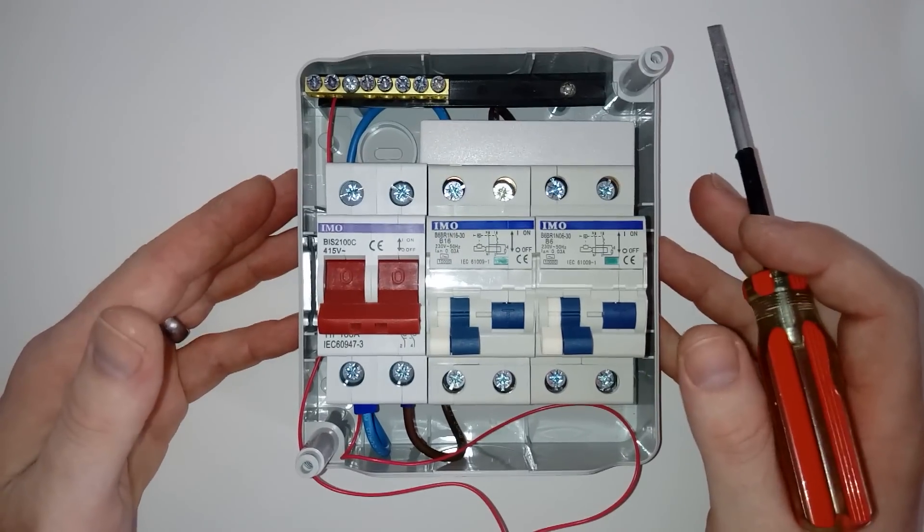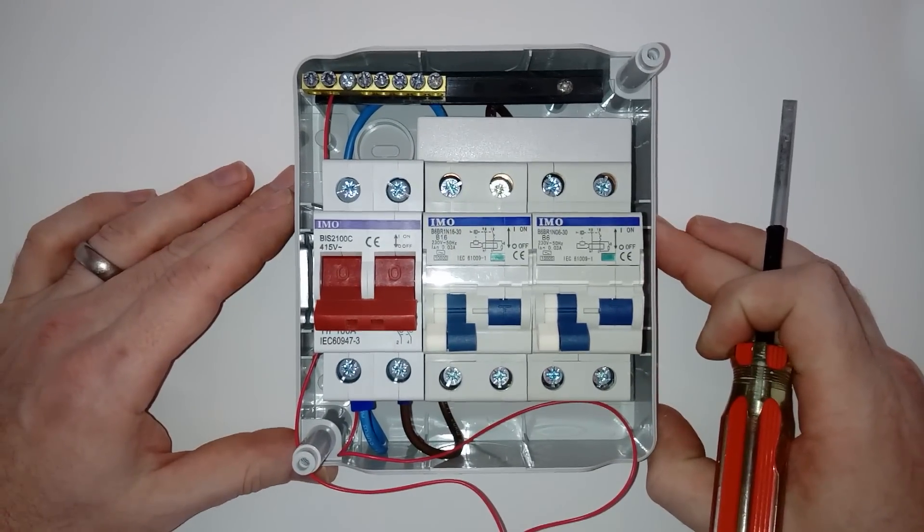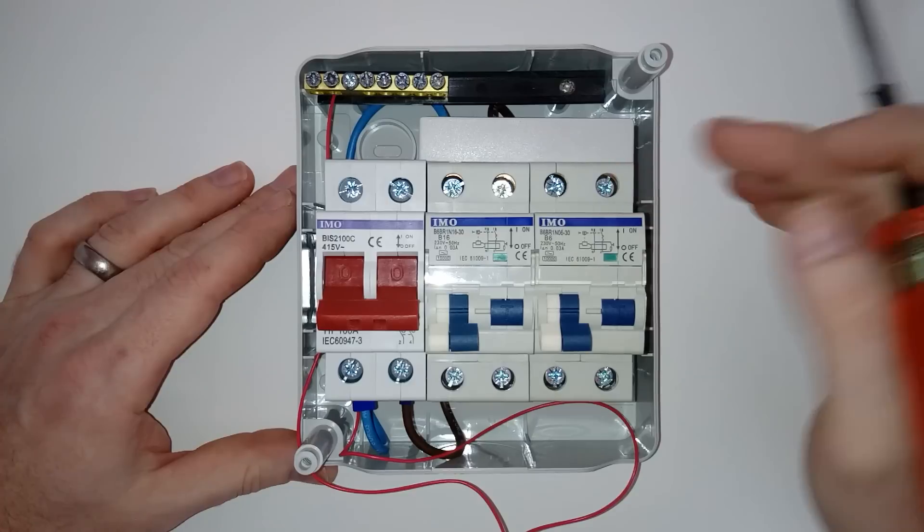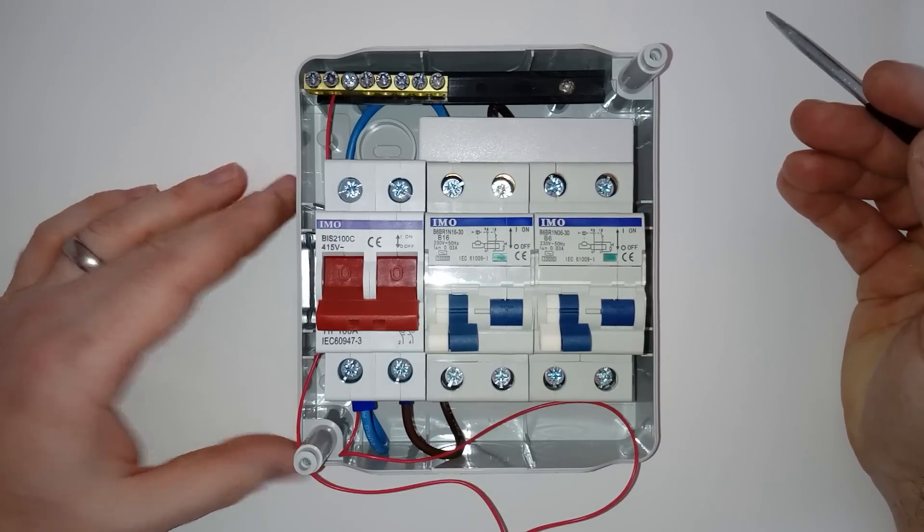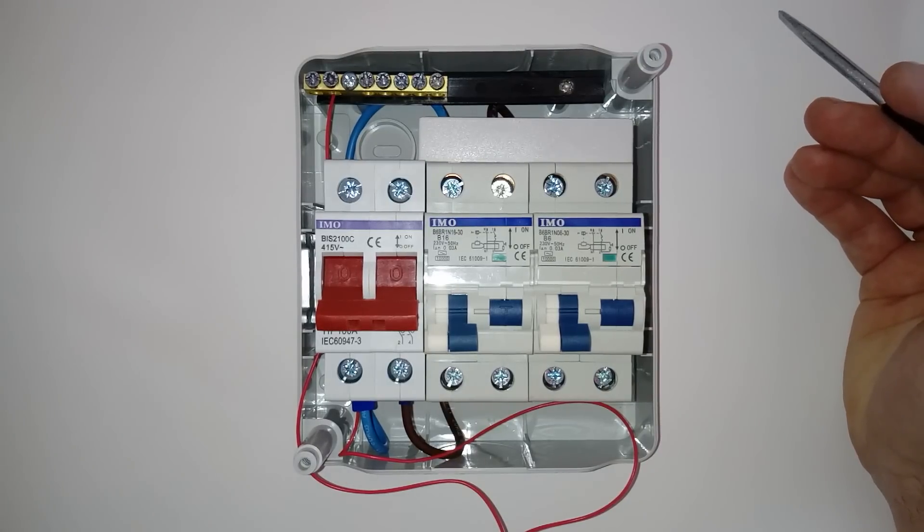And then also you've got to work out, if you're going to keep your 16 amp and your 6 amp rather than upgrading to a 16 amp as well for this one, you're going to have to work out what you've got in there. So if you've got sockets, you may have more than one lot of sockets,